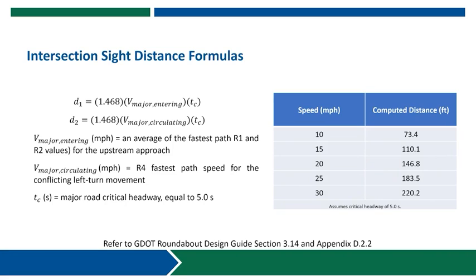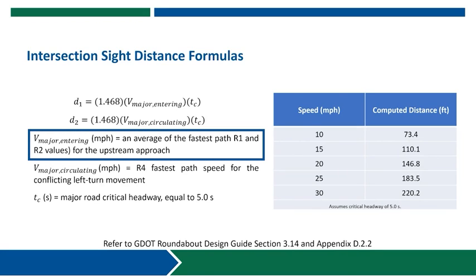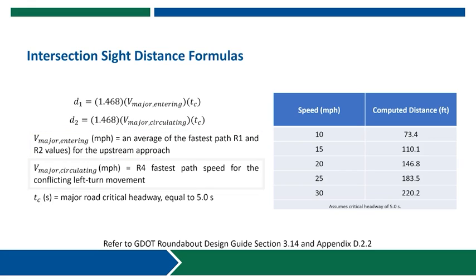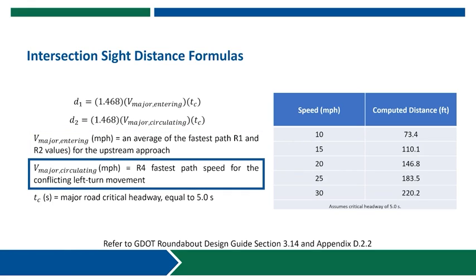Appendix D2 provides formulas for computing the required intersection sight distances. We look at the two different traffic streams and compute the distance based on the speed of those conflicting vehicles. For the first distance D1, we're considering the conflicting through movement from the adjacent cross street — using the average of the R1 entry speed and R2 circulating speed. The other path is the distance along the circulatory roadway, for which we're going to look at the R4 fastest path speed for a vehicle making a left turn past our entry.